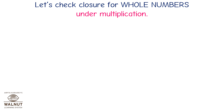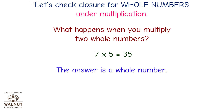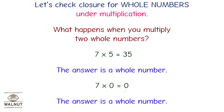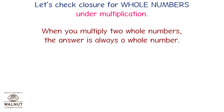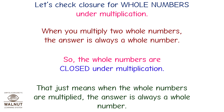Let's check closure for whole numbers under multiplication. 7 multiplied by 5 is equal to 35 — a whole number. 7 multiplied by 0 is equal to 0 — a whole number. When you multiply two whole numbers, the answer is always a whole number. So whole numbers are closed under multiplication.